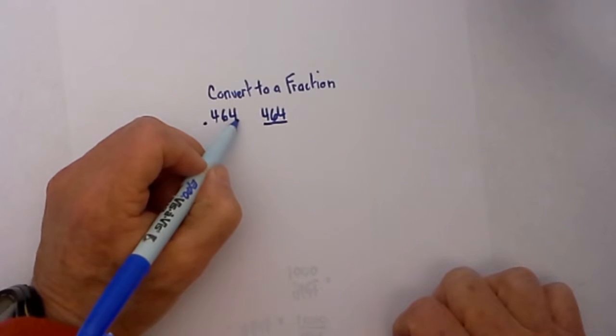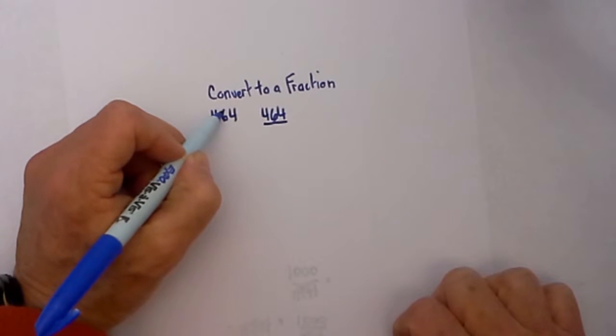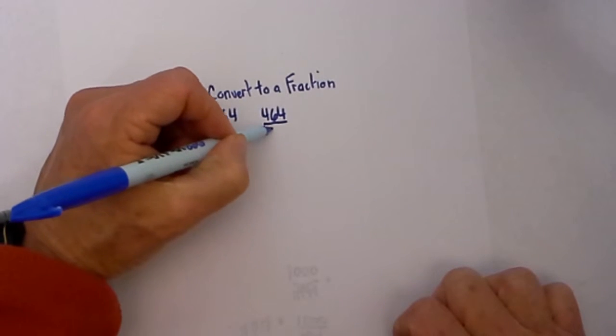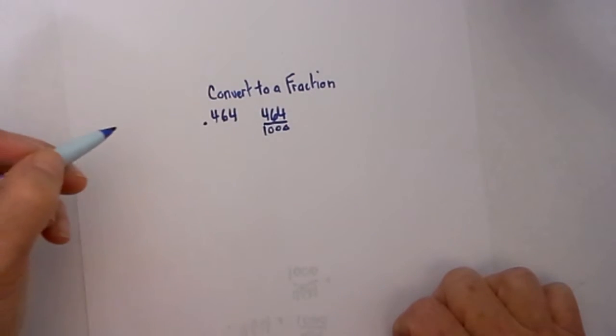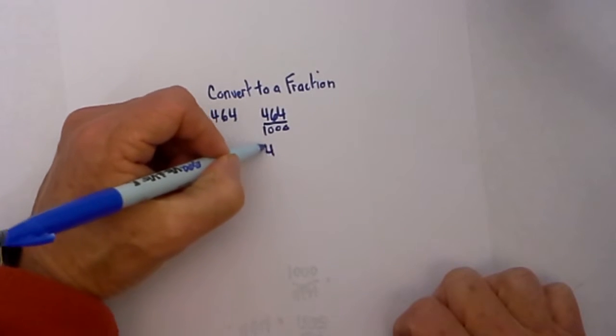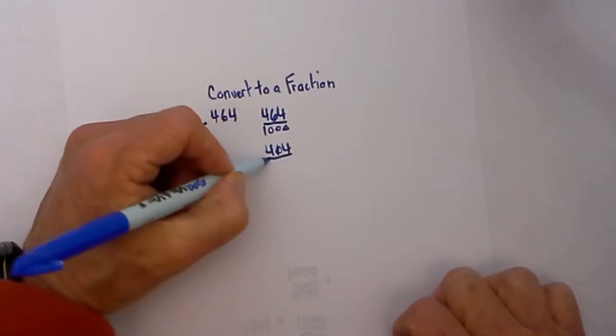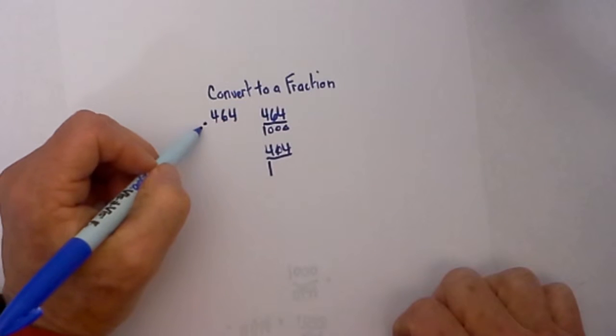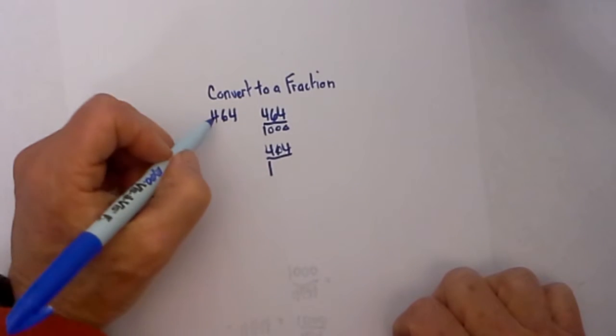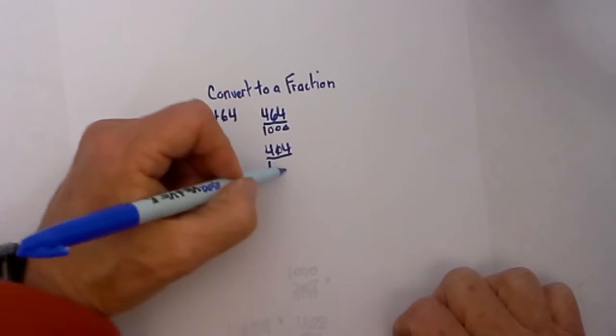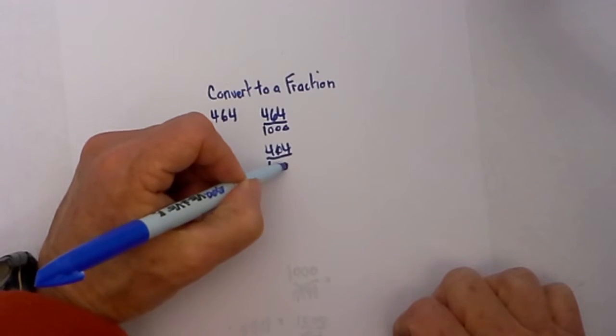You can either start from the number to the far right and count tens, hundreds, thousands, so it would be over 1,000. Or you can take 464 and write a 1, and then count how many numbers are to the right of the decimal point, which is 1, 2, 3. Either way you will get the same thing.